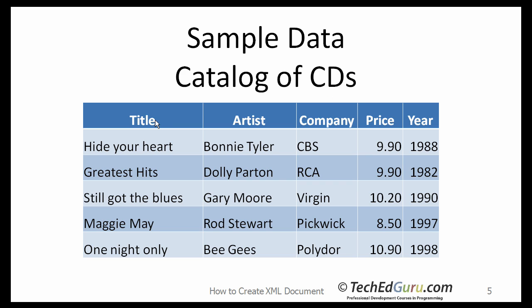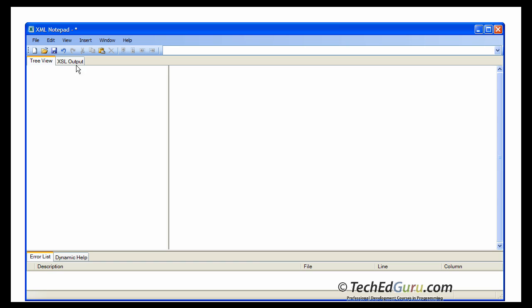Each CD contains five elements: title, artist, company, price, and year. So keep that in mind, and let's start the XML editor and start inserting the data.